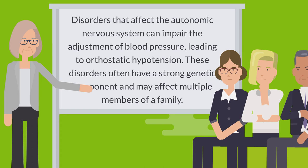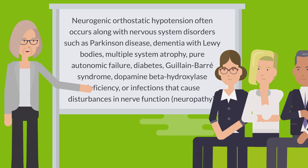These disorders often have a strong genetic component and may affect multiple members of a family. Neurogenic orthostatic hypotension often occurs along with nervous system disorders such as Parkinson's disease, dementia with Lewy bodies, multiple system atrophy, pure autonomic failure, diabetes, Guillain-Barré syndrome, dopamine beta-hydroxylase deficiency, or infections that cause disturbances in nerve function, known as neuropathy.